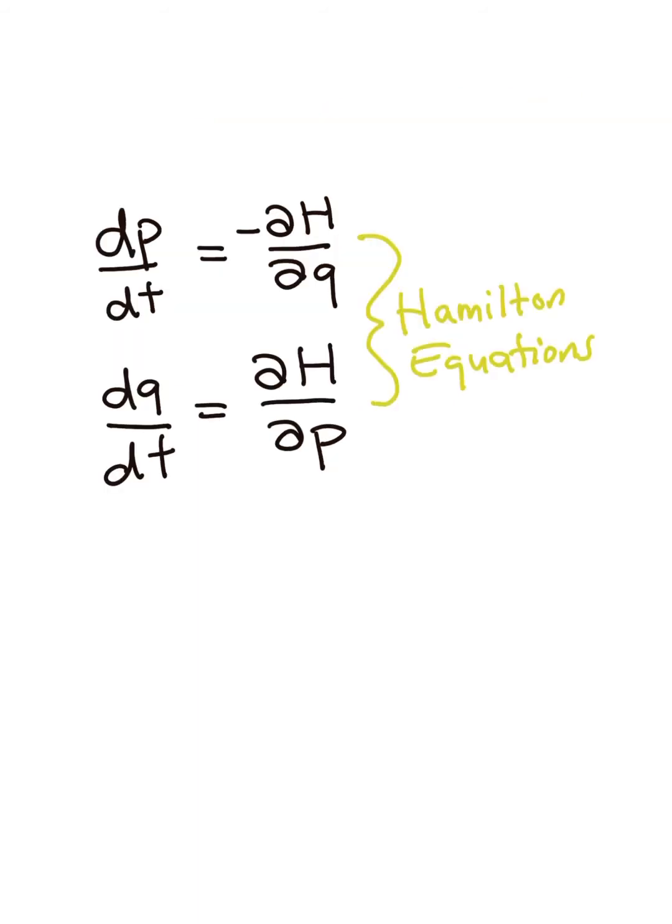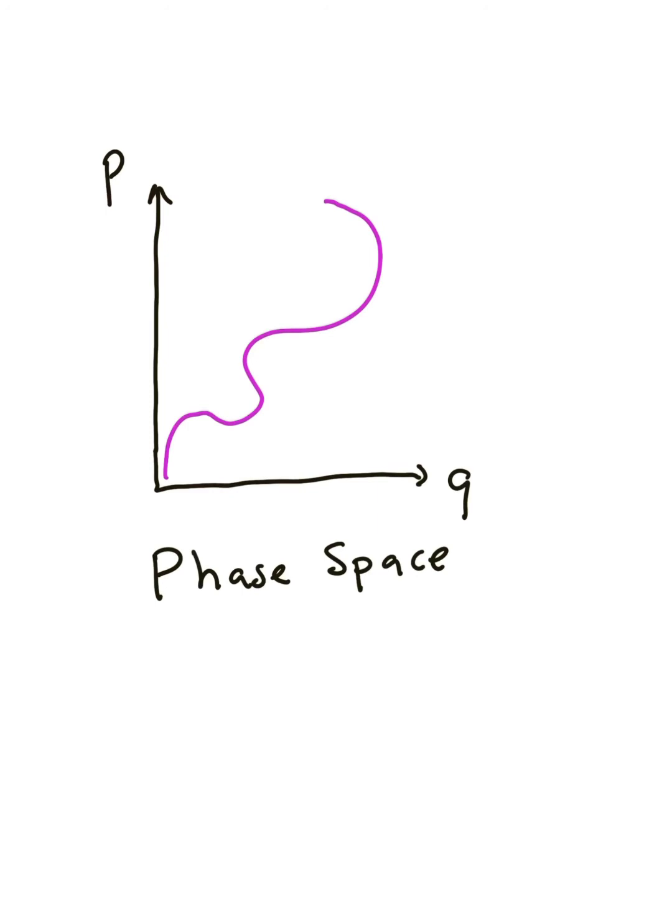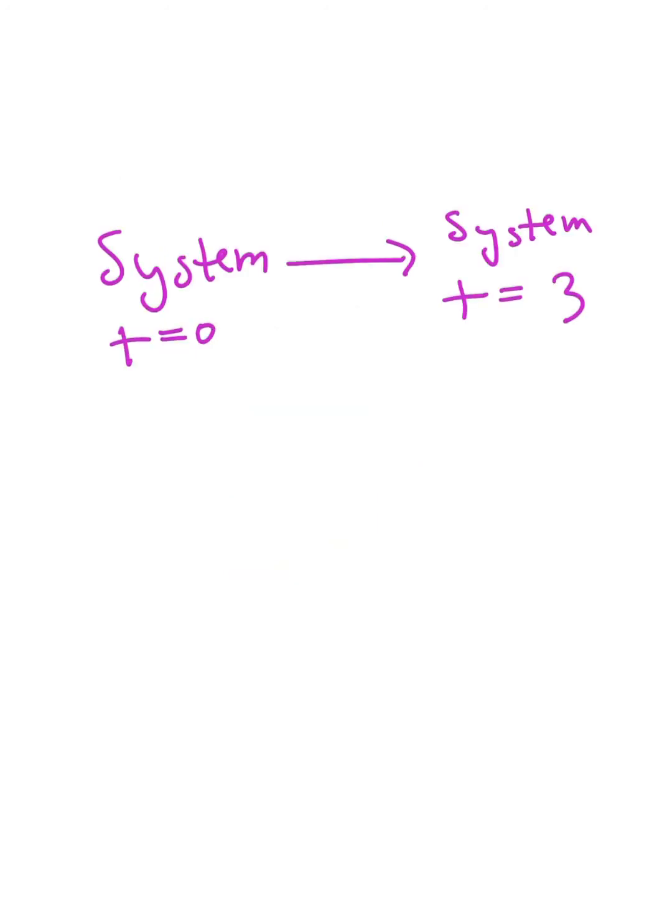The basic idea here is that in Hamiltonian mechanics, we solve the Hamiltonian equations to solve for the phase space flow, which tells us how our system evolves over time.